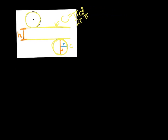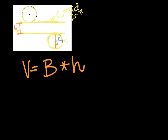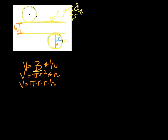Volume equals the area of your base — that's why it's a capital B — times the height. We're filling up the area of the base first. The area of the base of a cylinder is a circle; we know the area of a circle is pi times r squared. Then we multiply it by h as well. That's the volume formula for a cylinder. You can even break it down further by saying pi times r times r times h.